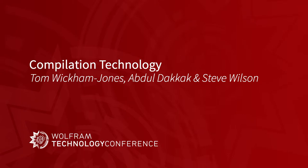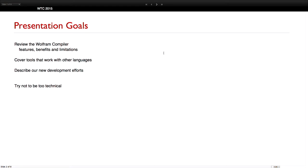I'm going to review — lots of you will know lots about the compiler. Maybe I'll ask a question first: how many people here use the Mathematica existing compile function? So that's quite good. Presumably for speed — that's your main reason. I'm just going to have a quick review of the Wolfram compiler, just to make sure everybody knows where we're coming from and what's existing now.